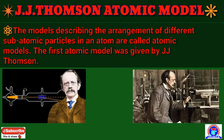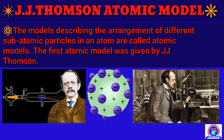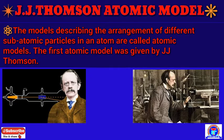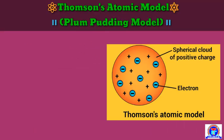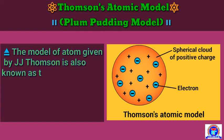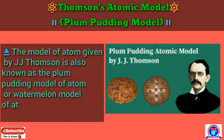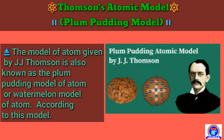The model describing the arrangement of different atomic particles in an atom is called the atomic model. The first atomic model was given by J.J. Thomson. Let us understand the Thomson atomic model.